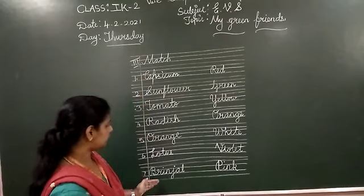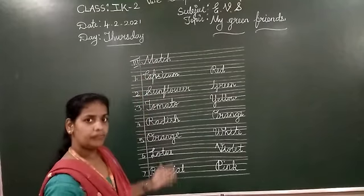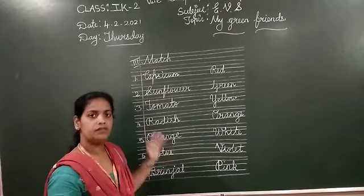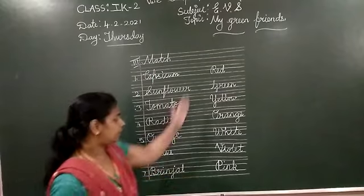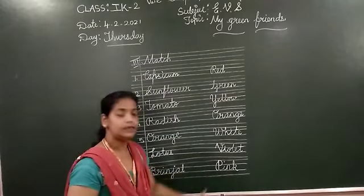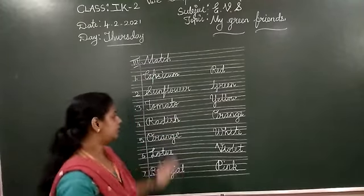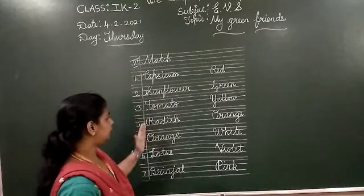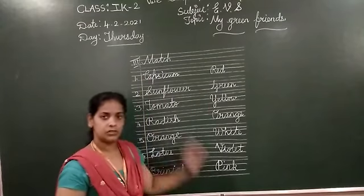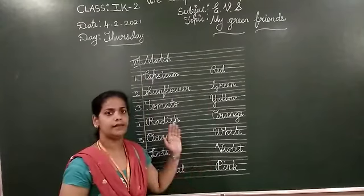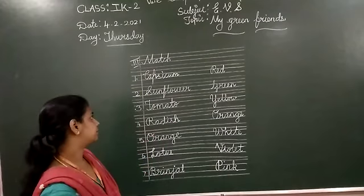So children, on the left side you can see some names of fruits, flowers and vegetables. On the right side, you can see colors. We are going to match the correct fruits and vegetables to the correct color. Okay children, let's start.